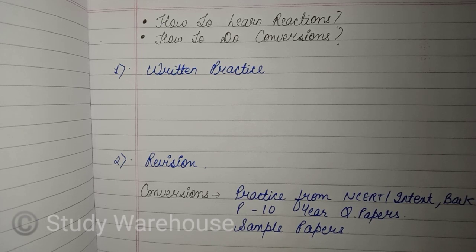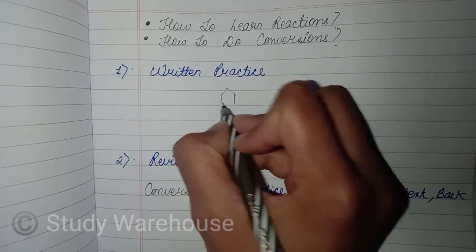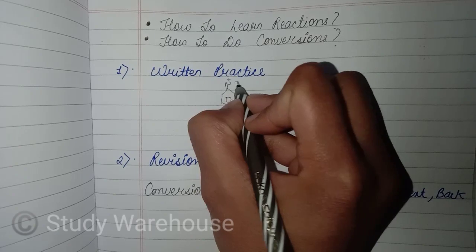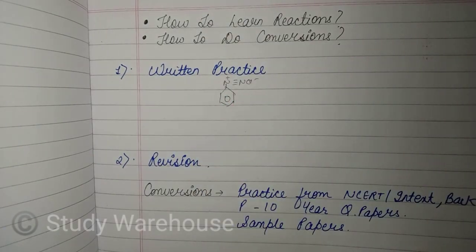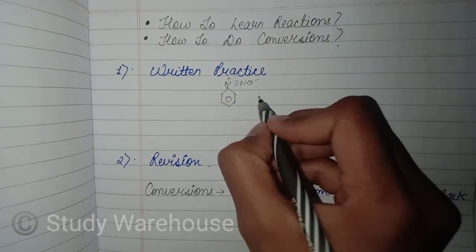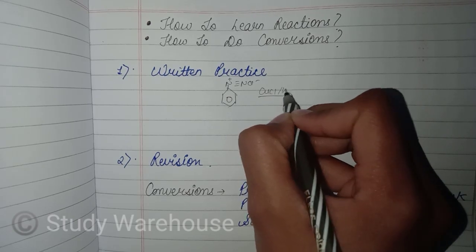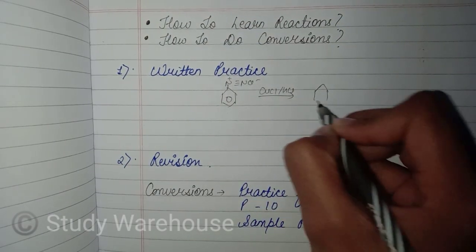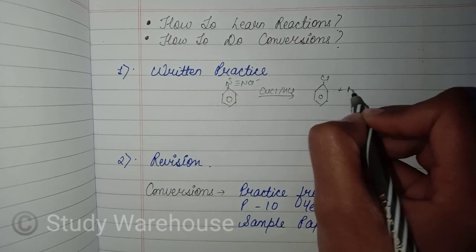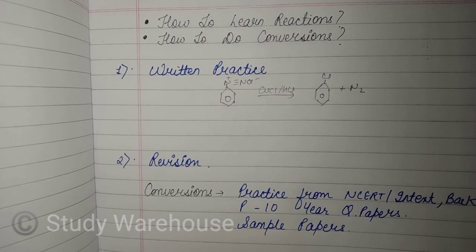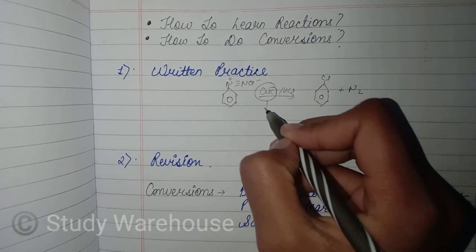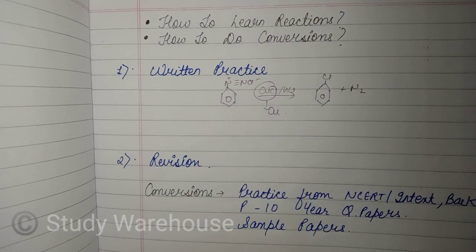For example, suppose there are three reactions that are interrelated: first is Sandmeyer's, second is Gattermann's, and third is Balz-Schiemann reaction. In Sandmeyer's reaction, we use benzene diazonium chloride, and we use CuCl and HCl, which leads to the generation of chlorobenzene and N₂ gets evolved.